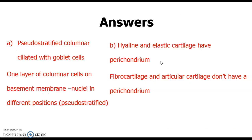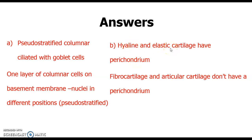The cartilage that lacks the perichondrium is fibrocartilage and articular cartilage. The one that does have the perichondrium is hyaline cartilage and elastic cartilage. Remember, articular cartilage is hyaline cartilage that is found in synovial joints.